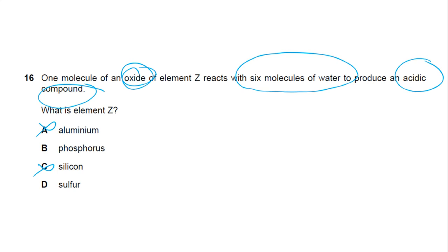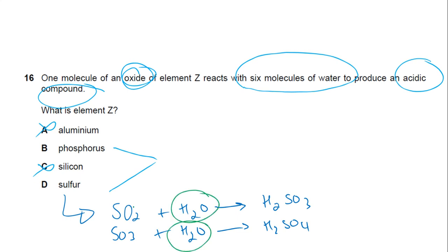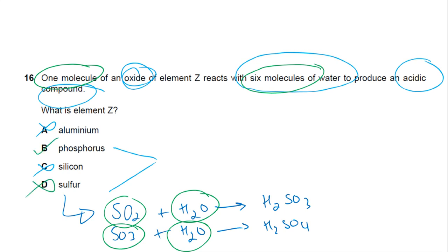Both phosphorus and sulfur oxides react with water to produce acidic solutions. The question is which uses six water molecules. Sulfur dioxide gives H2SO3 (one water molecule), and sulfur trioxide gives H2SO4 (one water molecule). Neither uses six, so option D is cancelled. By elimination the answer is B, phosphorus.